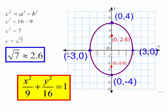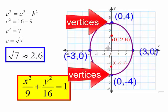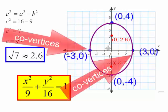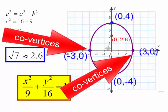So we have graphed this ellipse. It was a vertical ellipse because the largest denominator was under the y squared term. Our vertices are (0,4) and (0,-4). The co-vertices were (3,0) and (-3,0).